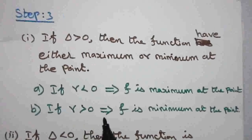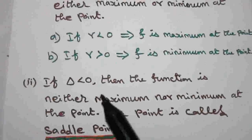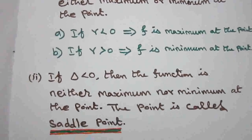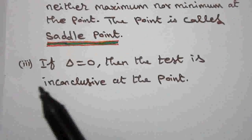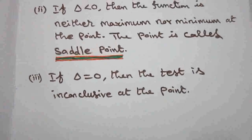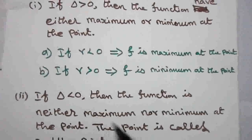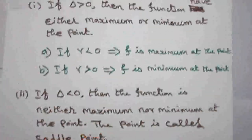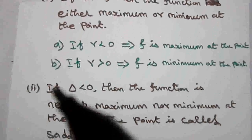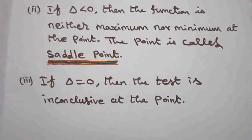If r is greater than zero, f is minimum at the point. If delta is less than zero, then the function has neither maxima nor minima at that point — the point is called a saddle point. If delta equals zero, the test is inconclusive, meaning the test fails.